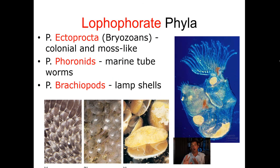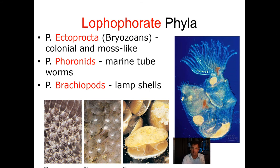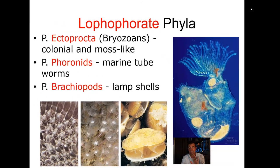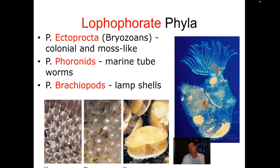These groups we're talking about now are all protostomes — all triploblastic, with three tissue layers. That first opening, the blastopore, forms the mouth; the second forms the anus. They all have a complete digestive tract — a true alimentary canal with specialization along the way. The first group is called the lophophorate phyla. There are actually three different phyla: the Ectoprocta, the Phoronids, and the Brachiopods. They're all called lophophorate because they share a structure called the lophophore.